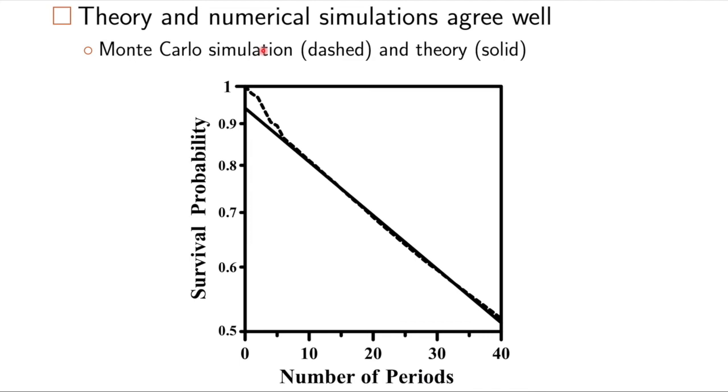A Monte Carlo simulation that used 100,000 initial conditions is shown in the dashed line, and then the theory from transition state theory is shown as a solid line. You see there's really good agreement.